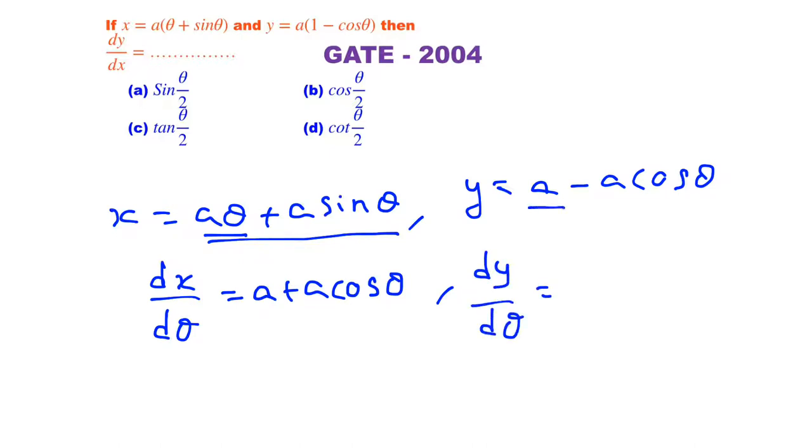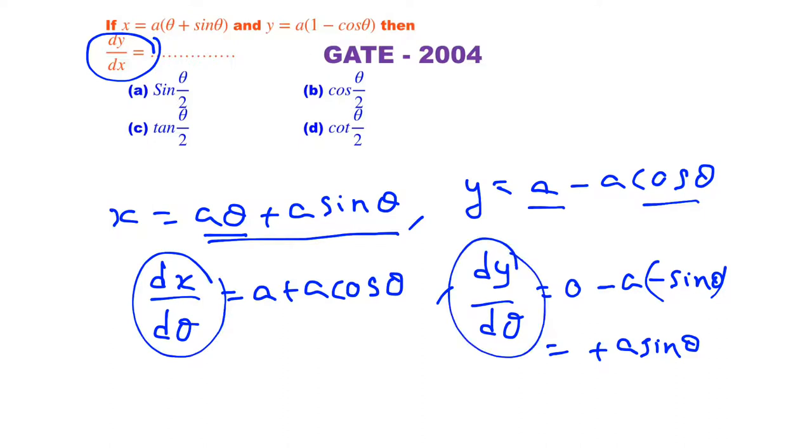For dy/dθ we get zero minus (-a sin θ), which is plus a sin θ. So we want the dy/dx value, but we know dx/dθ and dy/dθ. So by applying the property of parametric differentiation, this is considered equation 1 and this is equation 2.